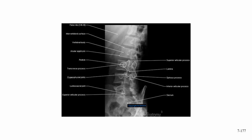If spondylolisthesis occurs on both sides, the posterior elements of the vertebra can actually shift away from the anterior portions. This is somewhat common among deadweight lifters — people who lift very heavy weights can cause this to shear just from the stress on the vertebrae. Depending on the degree, either nothing might be done, precautions might be taken, or surgery might be required to put those pieces back together.